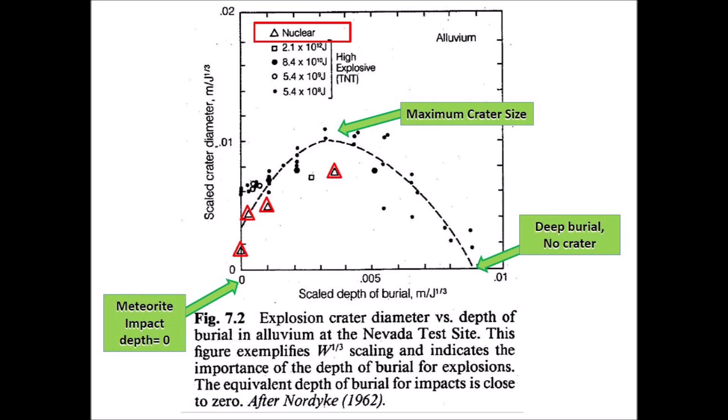This graph shows the scaled crater diameter versus the scaled depth of burial, making it possible to determine how deep to bury an explosive to get the maximum crater size. The impact of a meteorite would correspond to an explosion at the target surface with a burial depth close to zero. When a nuclear device is buried at sufficient depth, the explosion may be contained with no release of radioactive material to the atmosphere.